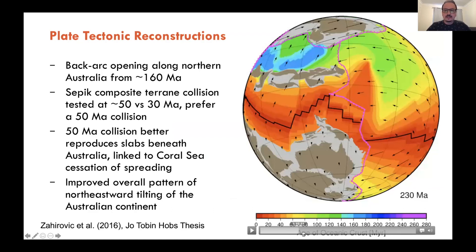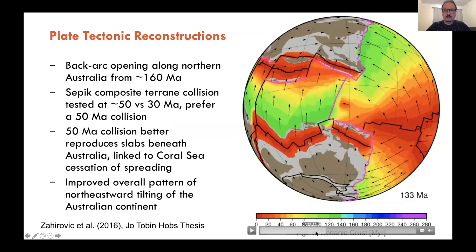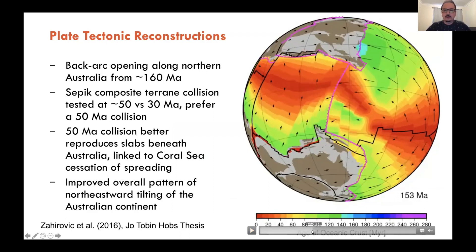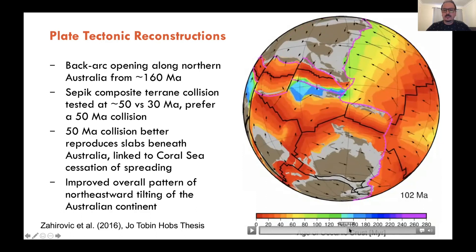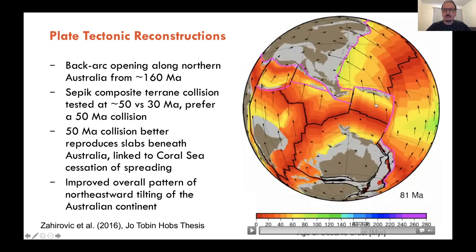One of the things that became very clear from the beginning was that there was a phase of back-arc opening along Papua New Guinea and the New Guinea margin from about 160 million years ago. We have the Central Irian Ophiolite belt, which is about 160 million year old oceanic crust. Very interestingly, parts of the Philippine archipelago formed at that same time and likely formed on this margin. In this animation, it's the biggest end member possible that we're portraying here.